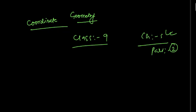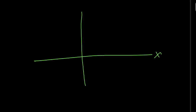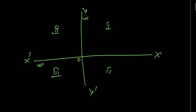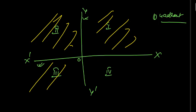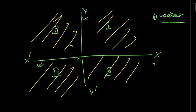In the previous class, we understood the basic concept. Yaha pa agar hamarai paas ye axises — this is X, O, and X dash; this is Y, O, and Y dash. This is the Y axis, this is the X axis. And this is the first quadrant, this is the second quadrant, this is the third quadrant, and this is the fourth quadrant.